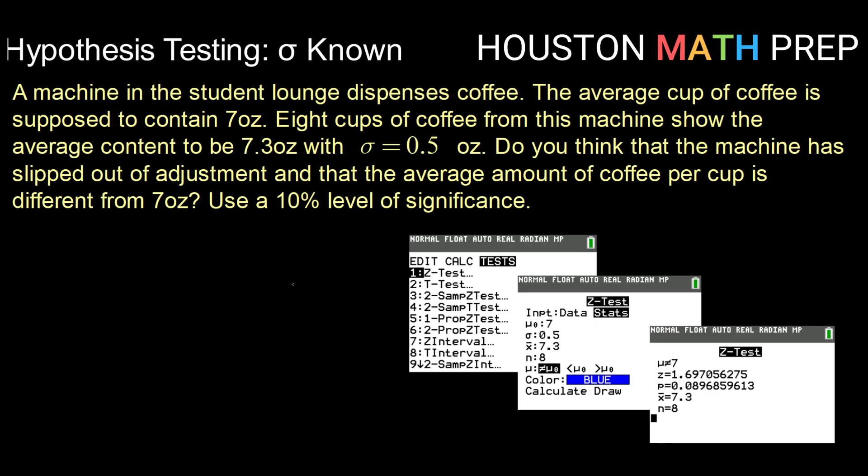So let's say that a machine in the student lounge dispenses coffee. The average cup of coffee is supposed to contain seven ounces. Eight cups of coffee from the machine show the average content to be about 7.3 ounces, with a standard deviation of 0.5 ounces. Do you think that the machine has slipped out of adjustment and that the average amount of coffee per cup is different than seven ounces? Use a 10% level of significance.